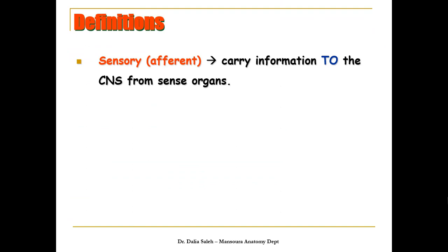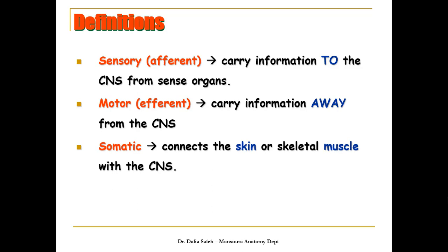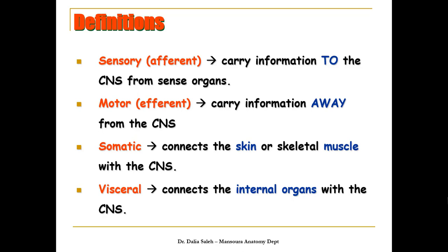Sensory or afferent fibers are fibers that carry information to the central nervous system from the sense organs. Motor or efferent fibers carry information away from the central nervous system. The word somatic — or soma — means body, referring to the skin and skeletal muscles connected by sensory or motor fibers to the central nervous system. Visceral refers to our viscera or organs; visceral fibers connect the internal organs with the central nervous system.